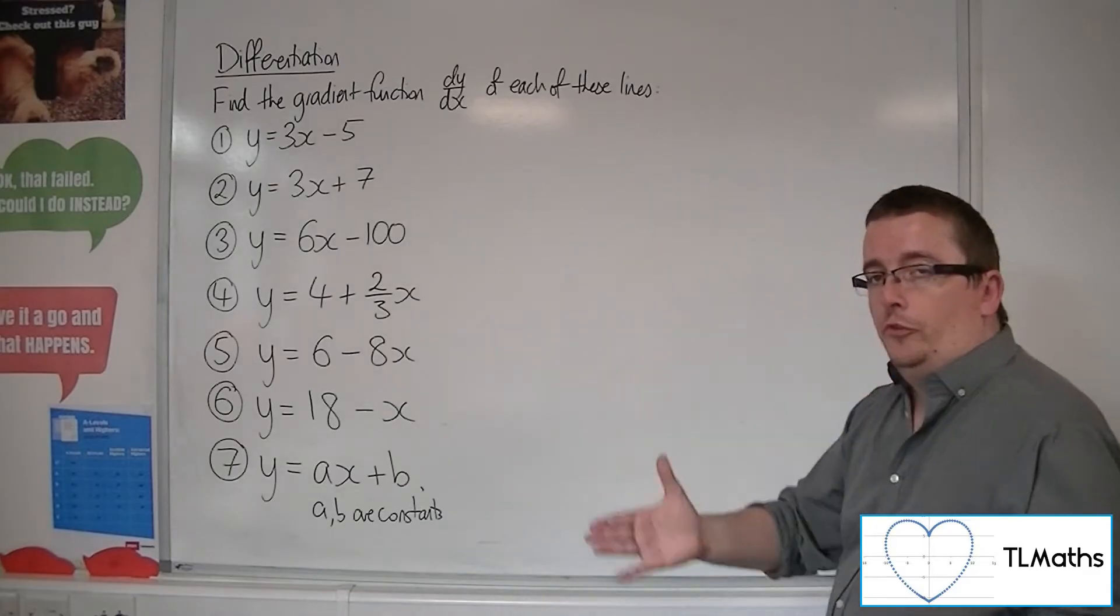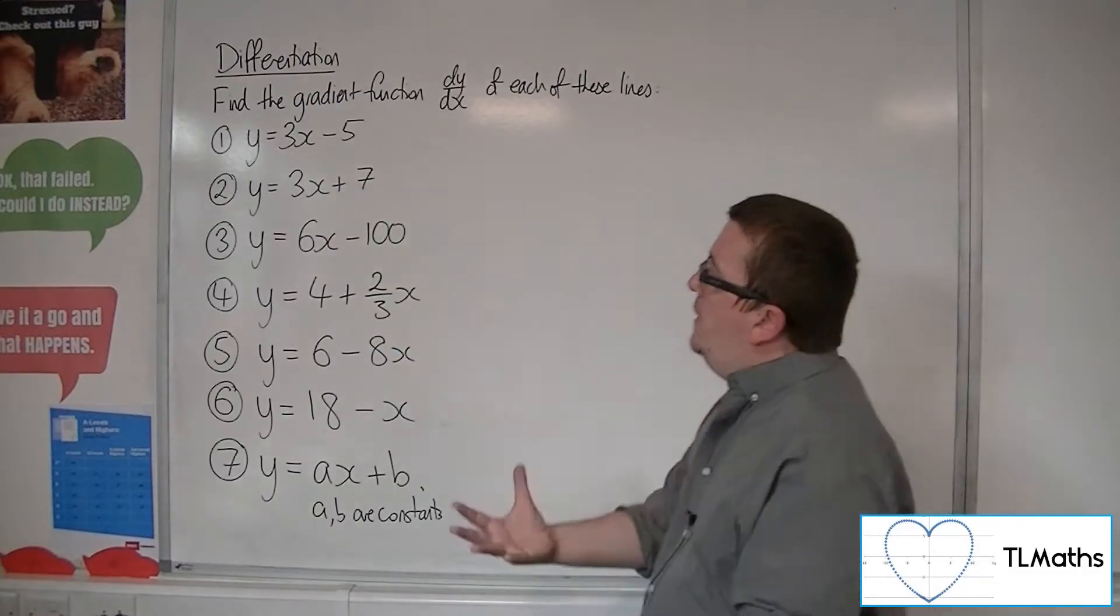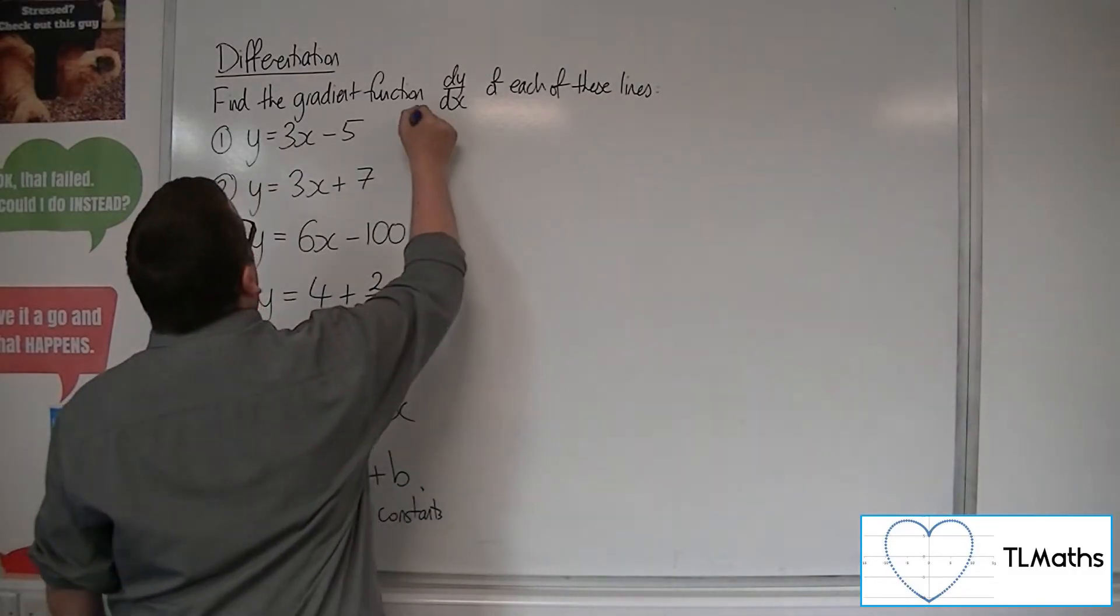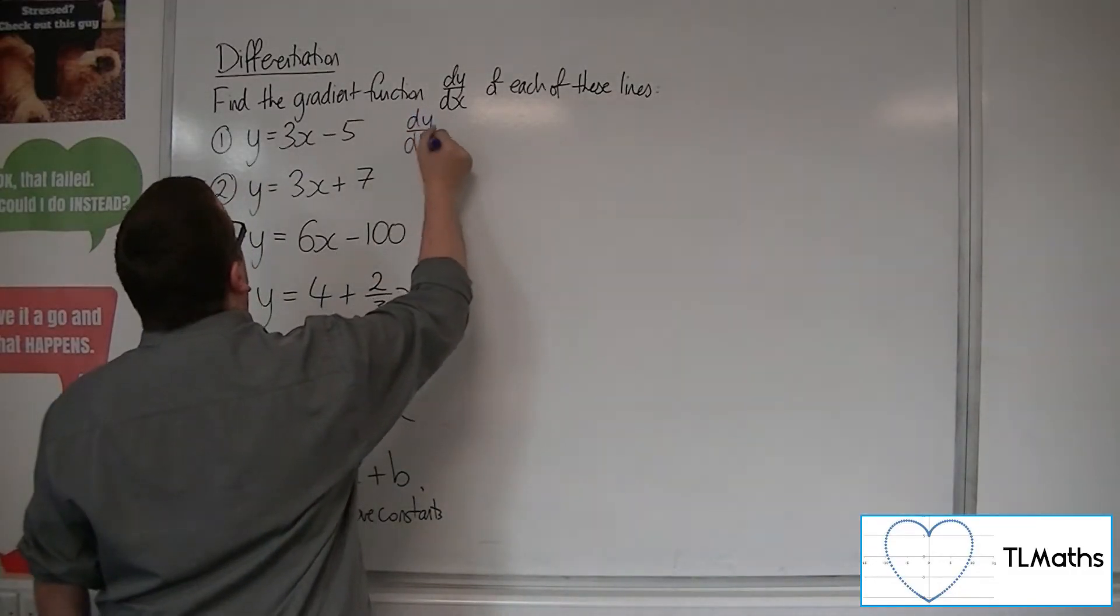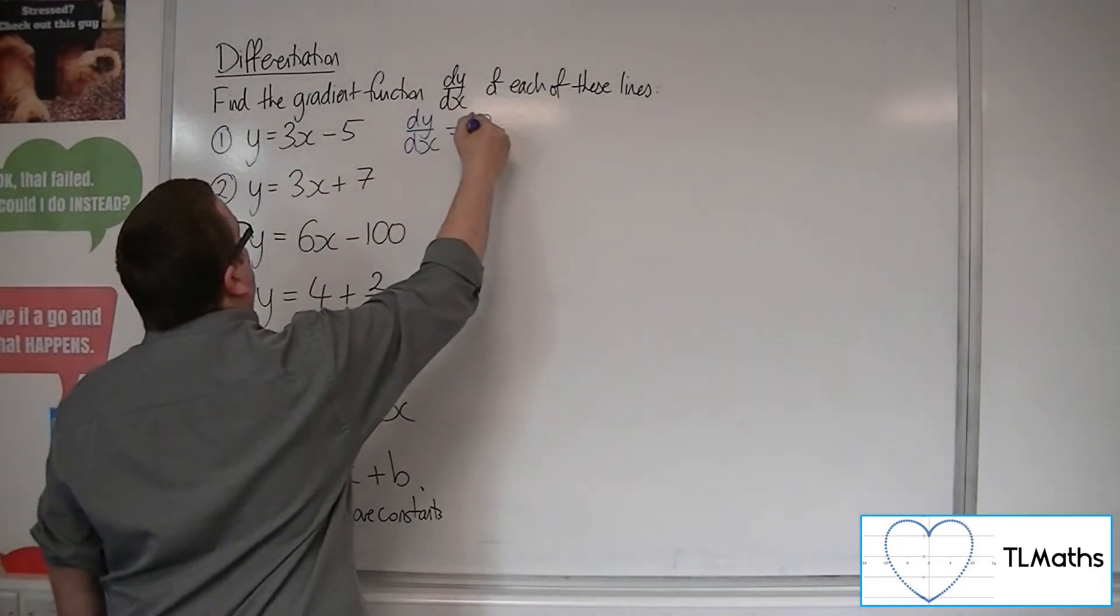Because these are all straight lines, the gradient is unchanging, it is fixed. So the function dy by dx is always going to be constant. So dy by dx in this case will just be 3.